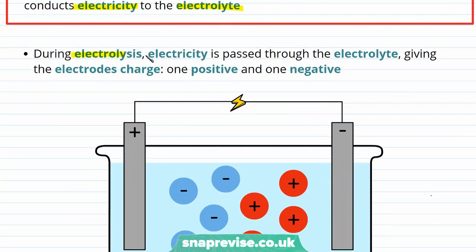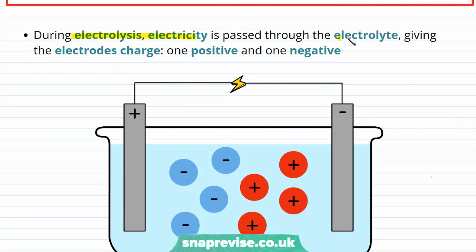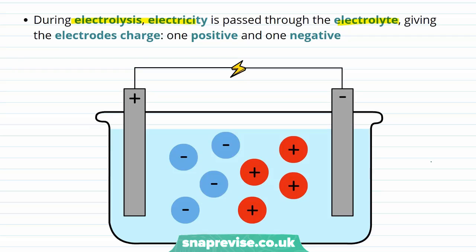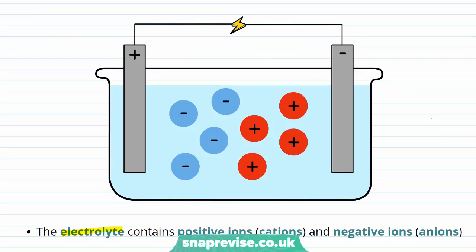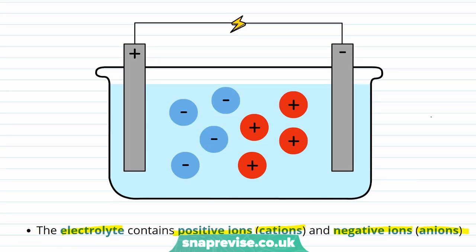During the electrolysis process, electricity is passed through the electrolyte. The result is that the electrodes gain charge — one becomes positively charged and one becomes negatively charged. A potential difference is set up between the two electrodes, allowing current to flow through the electrolyte. The electrolyte will contain positive ions, known as cations, and negative ions, known as anions. We therefore have charged electrodes and charged ions, and it's this attraction that leads the ionic compound present within the electrolyte to break down during the electrolysis process.